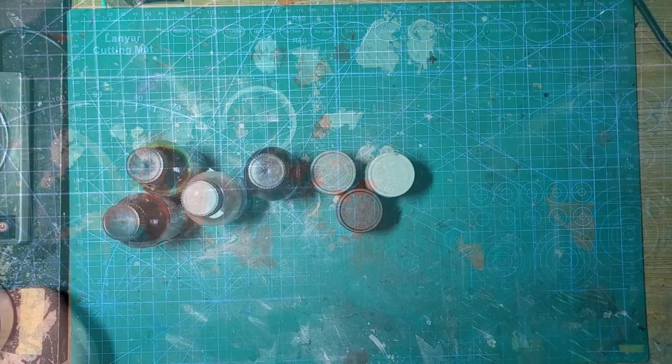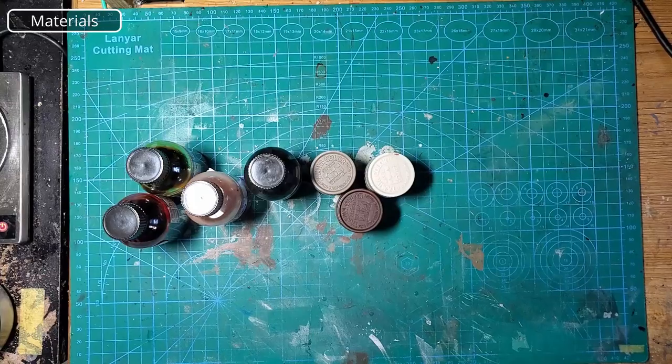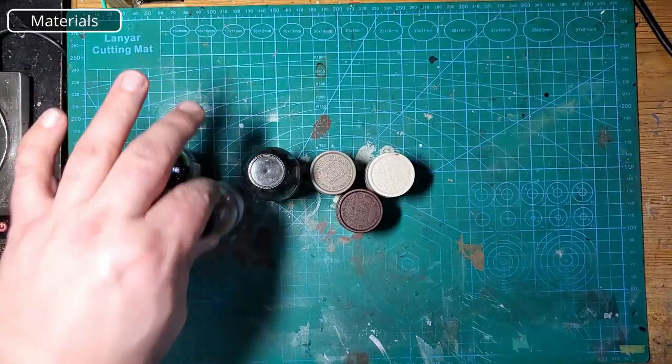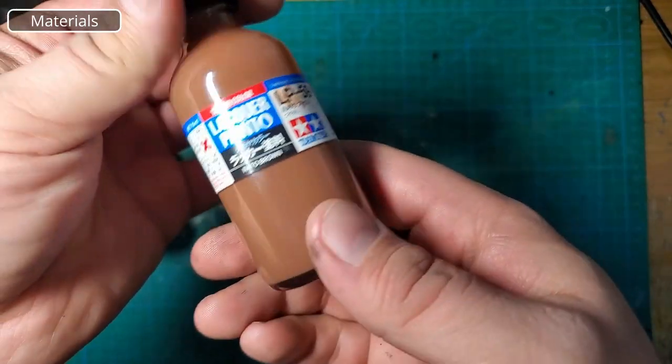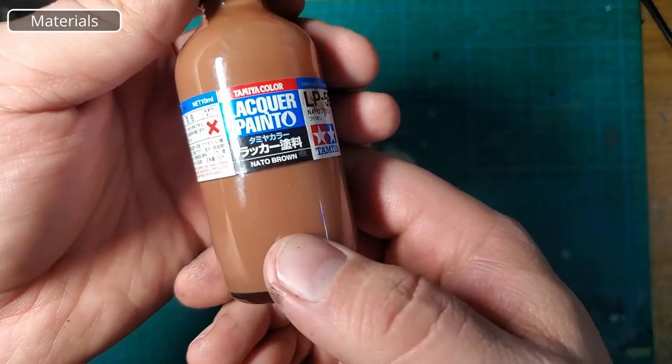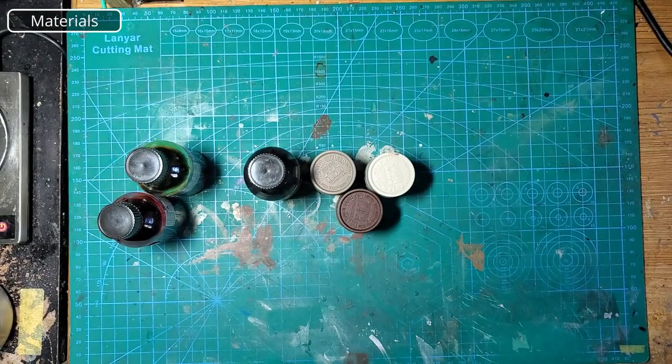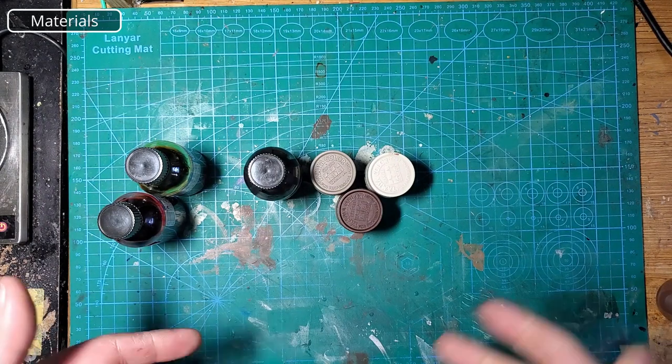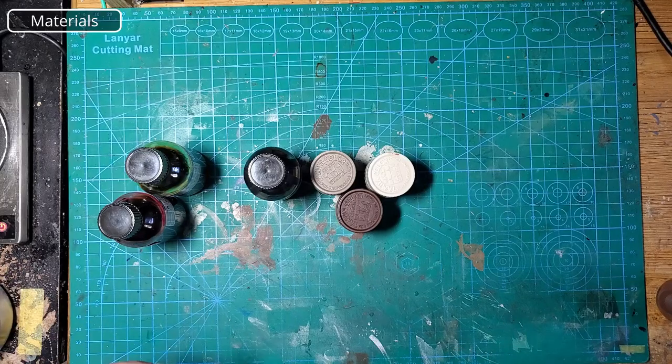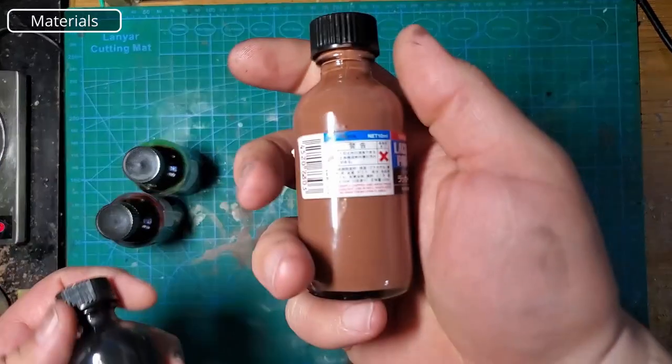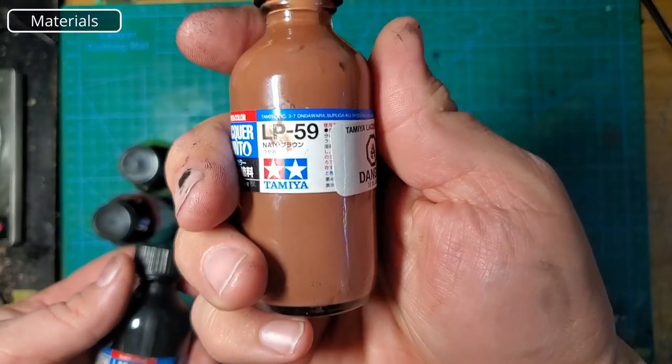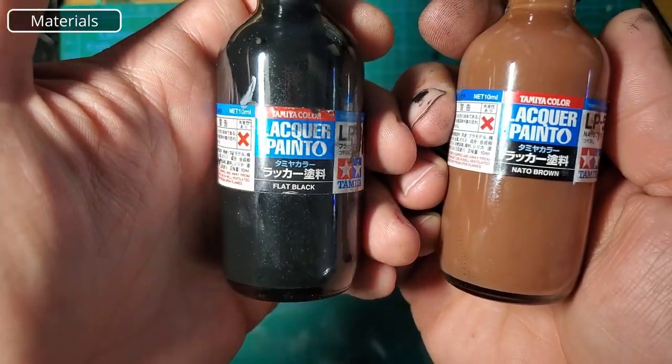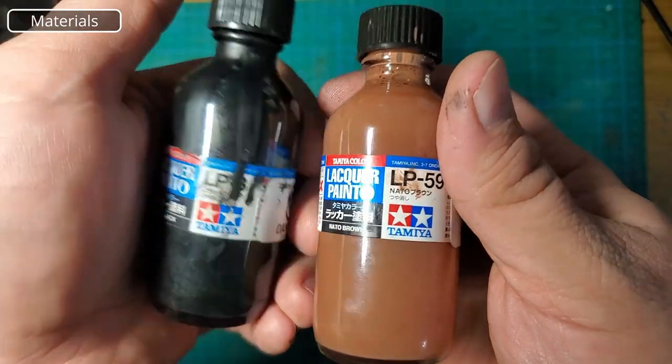All right, so real quick we're just going to run through what we're going to be using to paint this. You can use acrylics if you want, I have some of the lacquer so I'm using them. We're also going to use the NATO brown and some flat black to make a couple of knots in the wood.